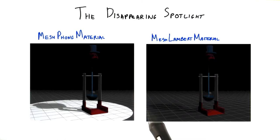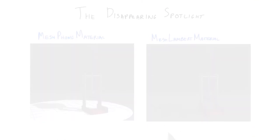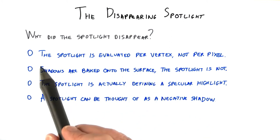Strangely enough, the spotlight disappears, but the shadow remains if you look closely enough. Why did the spotlight disappear?